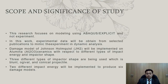For the scope and significance of study, this research focuses on modelling using Abaqus Explicit and not experiment. Experimental data will be obtained from selected publications to mimic the experiment in dynamic analysis. The Johnson-Holmquist JH2 damage model will be implemented on alumina AL2O3 ceramics with respect to different types of impact energy and impactor shape. Three different types of impactor shapes are used — blunt, ogival, and conical — and two different impact energies will be implemented to produce six different damage models.